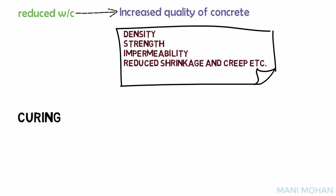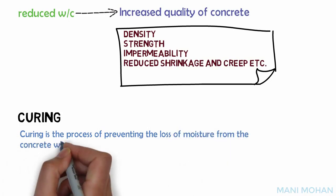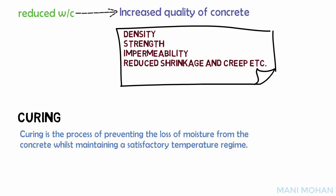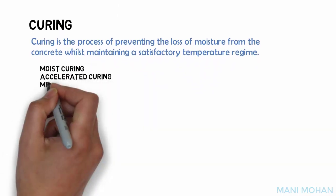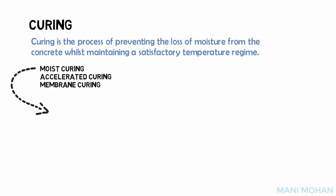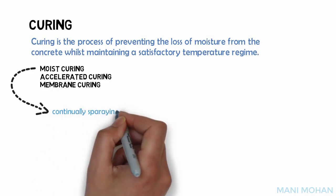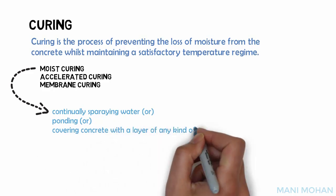Water is also used for curing of concrete. Curing is the process of preventing the loss of moisture from the concrete whilst maintaining a satisfactory temperature regime. This can be done either by moist curing, accelerated curing, or membrane curing. The most general type is moist curing, which aims to keep the concrete as nearly saturated as possible at normal temperature. This is achieved by continually spraying water, by ponding, or by covering the concrete with a layer of sacking which is kept wet.